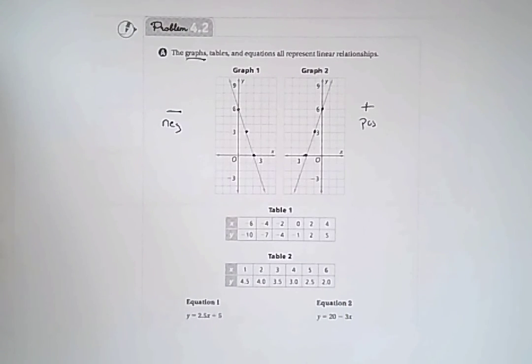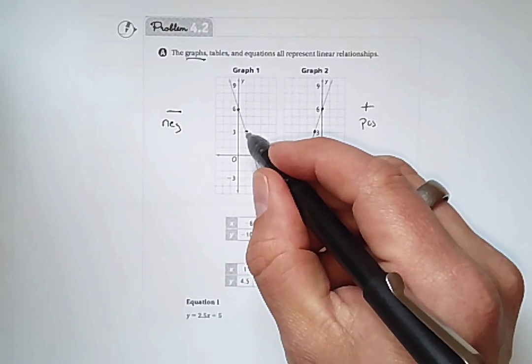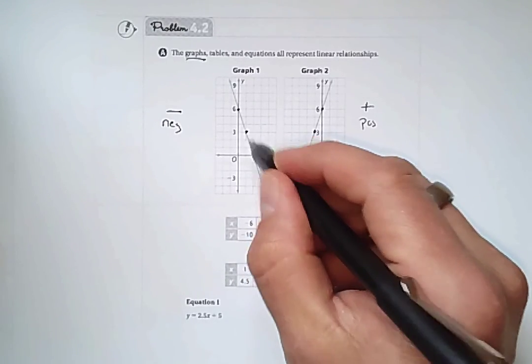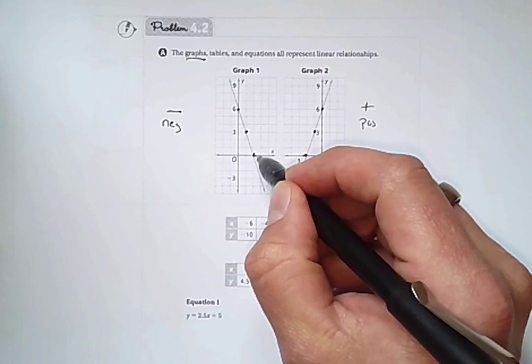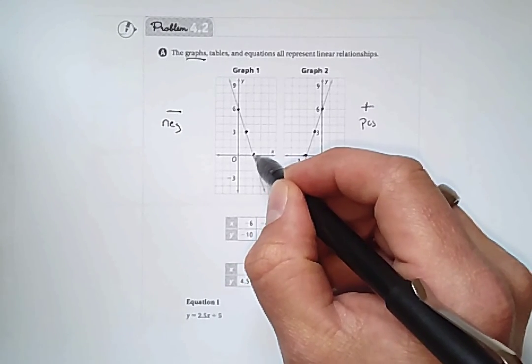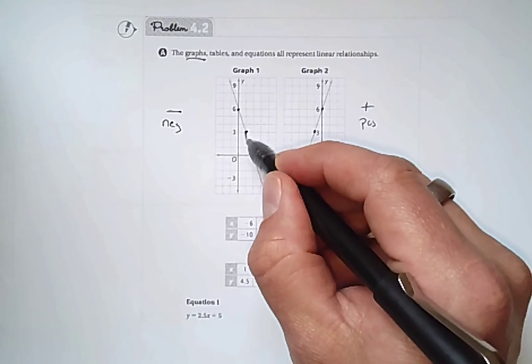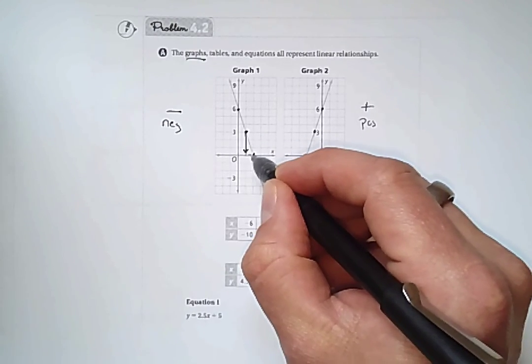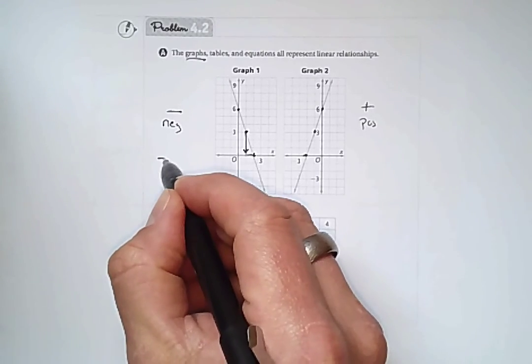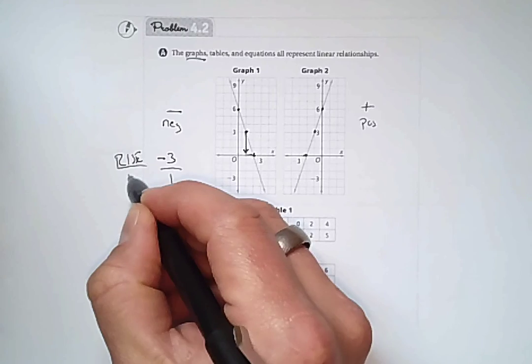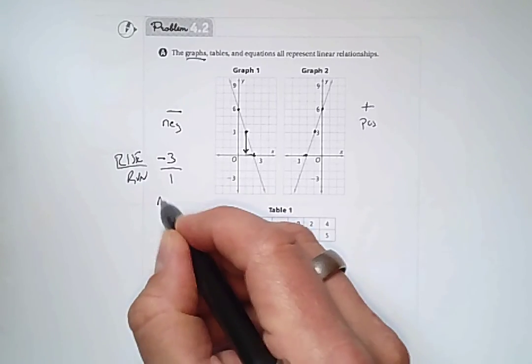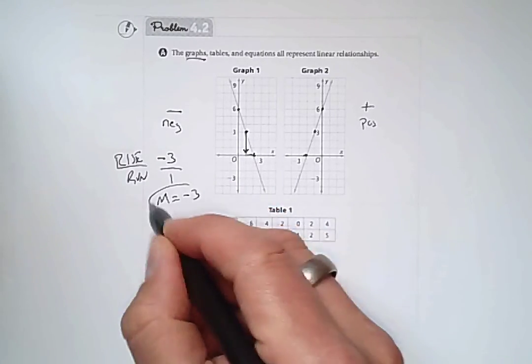So in this case, when we're looking at it, we are looking going from this point to this point. I'm just going to choose these two. This point is 1, 3, and this point is 2, 0. So here I'm going down 3, and here I'm going over 1. So down 3, over 1, that's my rise, that's my run. So my slope is negative 3 on this one.